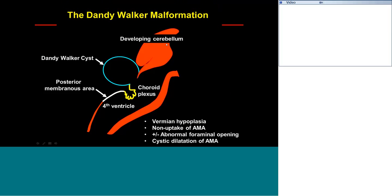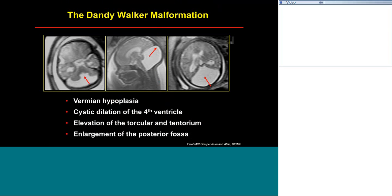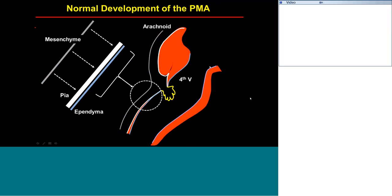Here's a fetus with Dandy-Walker malformation. You can see the mesodermal structures — this torcula is meant to reach its final destination at about 12 weeks of gestation, implying that something arrested this on the way down earlier than that. There's the hypoplastic vermis and this large cystic CSF space — a combination of neuroepithelial and mesenchymal-mesodermal structure abnormalities.